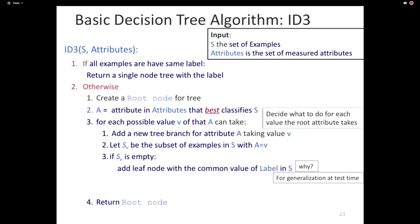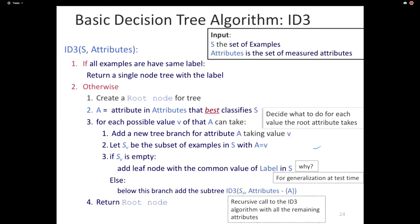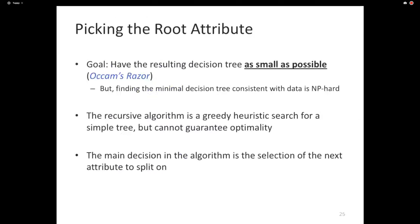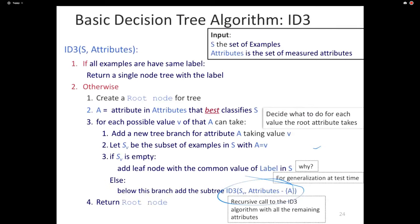If S_V is not empty and we haven't hit a leaf, we continue growing the tree. We need an algorithm that can create a tree using the subset S_V and the remaining attributes minus A — since A has already been used. Luckily, we have that algorithm: it's called ID3. So we make a recursive call to ID3 with parameters S_V and Attributes minus A. We keep recursively growing down, and this is the entirety of the algorithm.